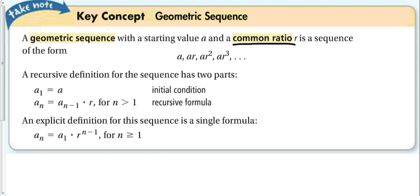Our recursive and explicit definition. To get from one term to the next one, our initial condition is a sub 1 equal to a. To get to the next one, we just multiply by r.